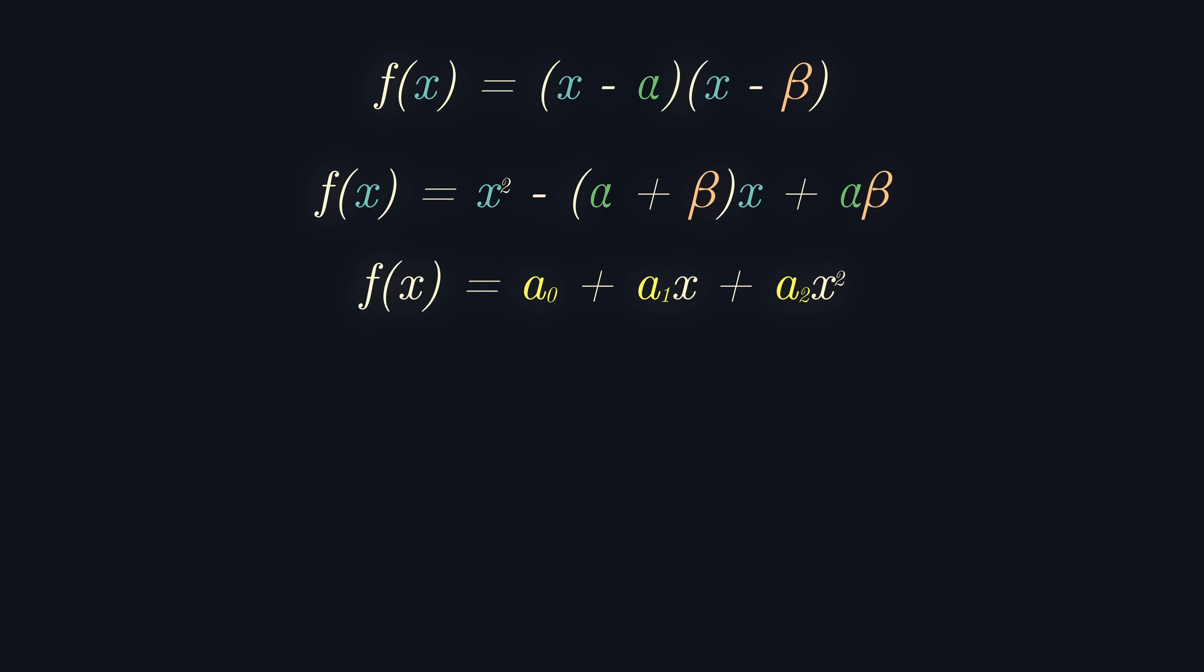Expanding that gives us that f of x equals x squared minus (alpha plus beta) x plus alpha beta. Hence, we have found the coefficients of x and the constant term in terms of our roots, alpha and beta.